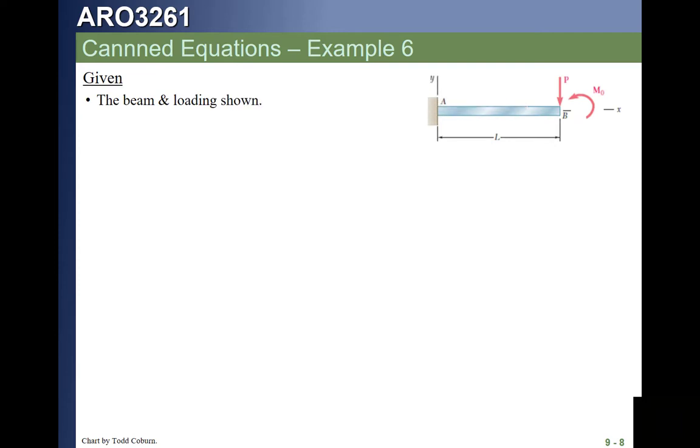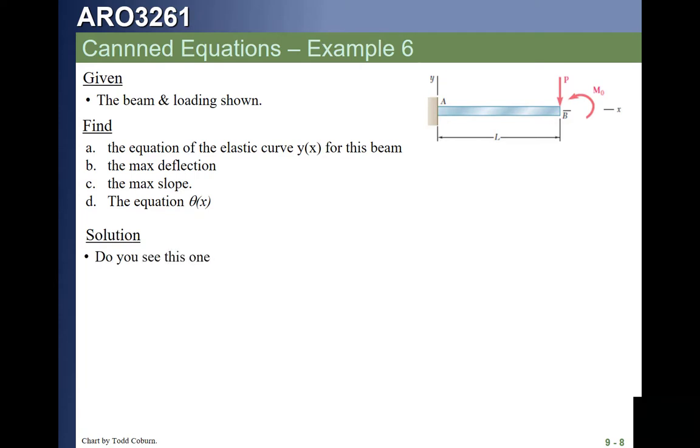Here is another example. This one also has multiple loads. Once again, we look in our handbook and we don't see this case anywhere. However, we do see a case for a cantilever beam with a point load. That's case 1A. And we see a case for a cantilever beam with an end moment. That's case 1D. So, if we take the results from each of these, for example, the elastic curve would be the summation of these two. The shear and moments would also be the combination.